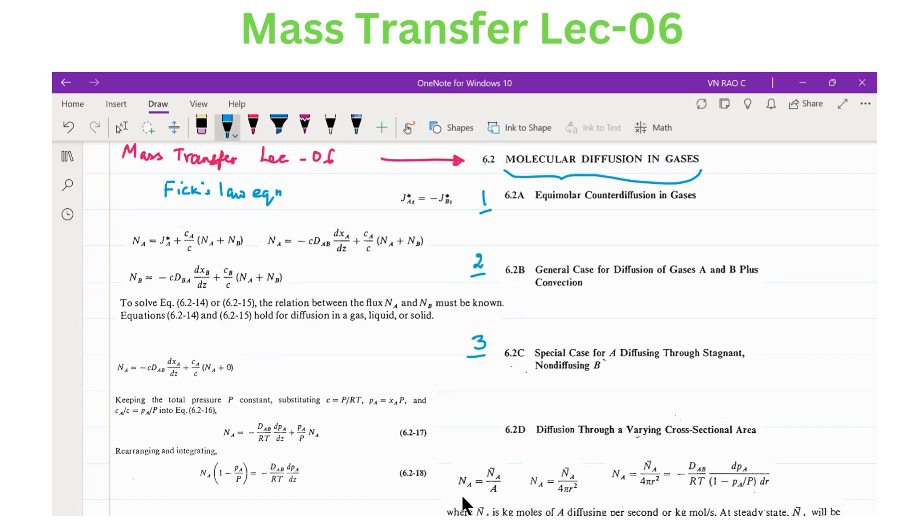The third case, special case for A diffusing through stagnant or non-diffusing B. And the fourth case, where diffusion through a varying cross-sectional area takes place. That means the area is not constant, it is changing. For equimolar counter diffusion, we need a relation between NA and NB that is given as NA equals minus NB.